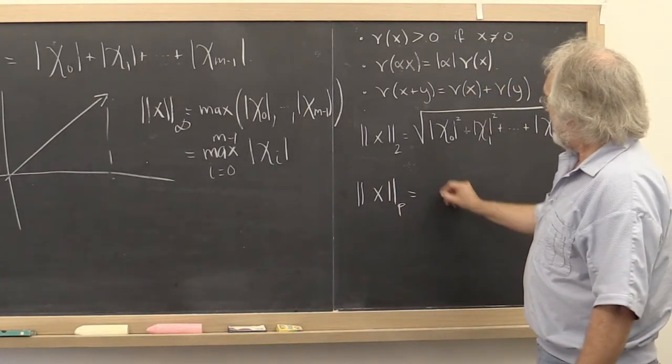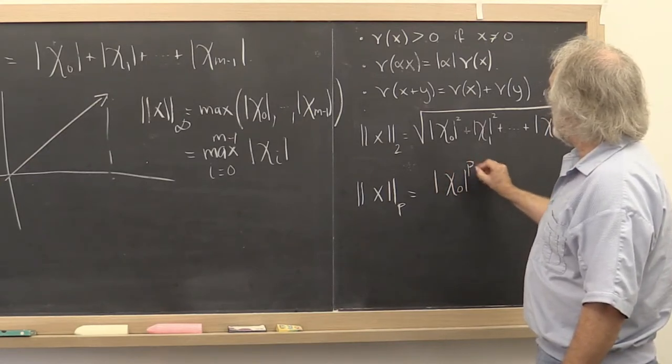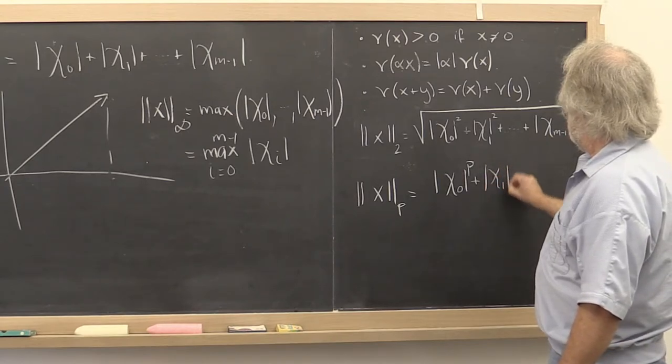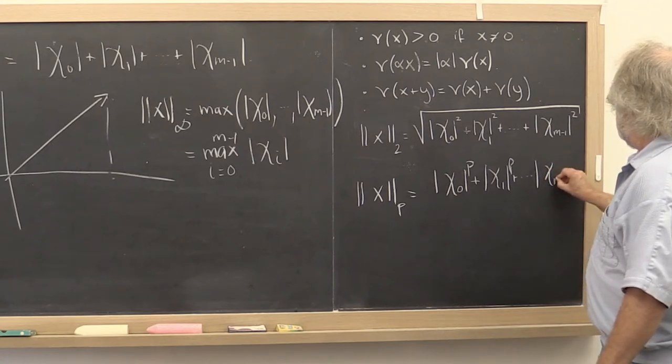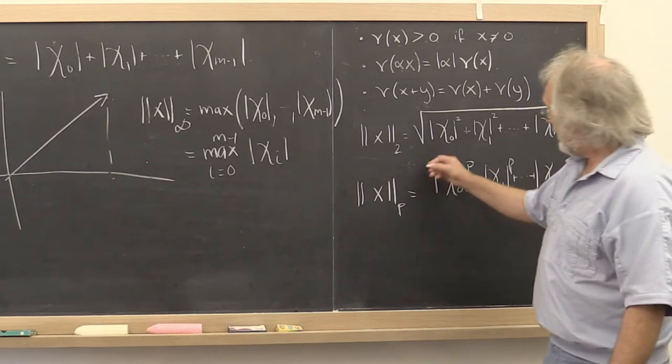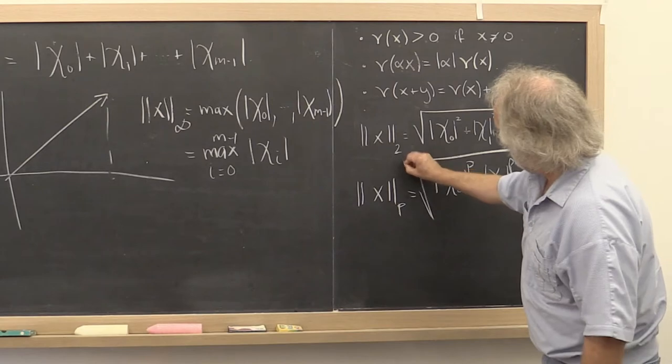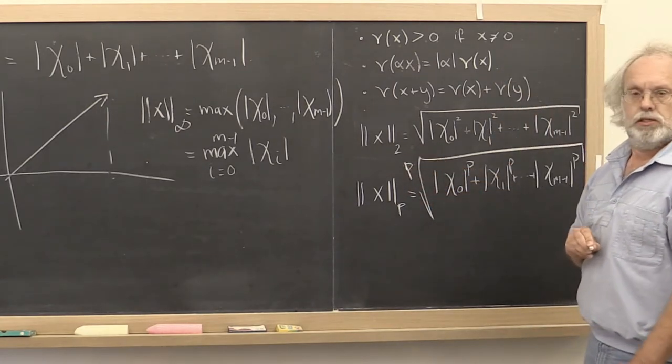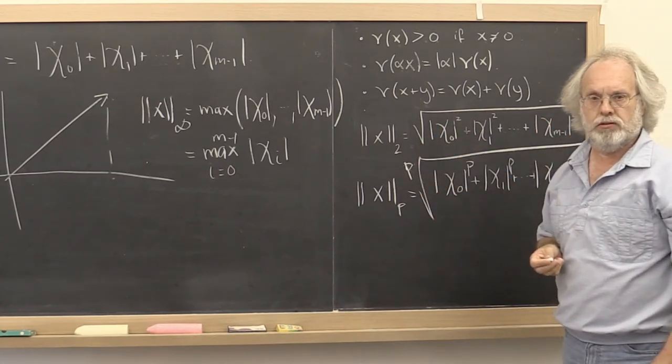The p-norm adds the components, the absolute values of the components raised to the p-th power together, and then takes the p-th root of that. Well, let's write that as that. Of course, you can think of that as quantity raised to the 1 over p-th power instead.